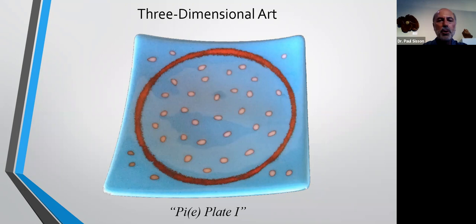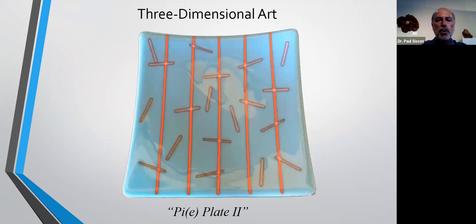This piece does exist in real life — I know because I made it. This is a fused glass plate, about nine inches by nine inches square. This and the next one I made to demonstrate ways of approximating the number pi. I'll leave you with some math homework: this piece uses the Monte Carlo method to approximate pi, and the next piece uses the Buffon needle problem to approximate pi. I'll let you come back to the recording and try to figure out what rational number approximations of pi these two plates represent.